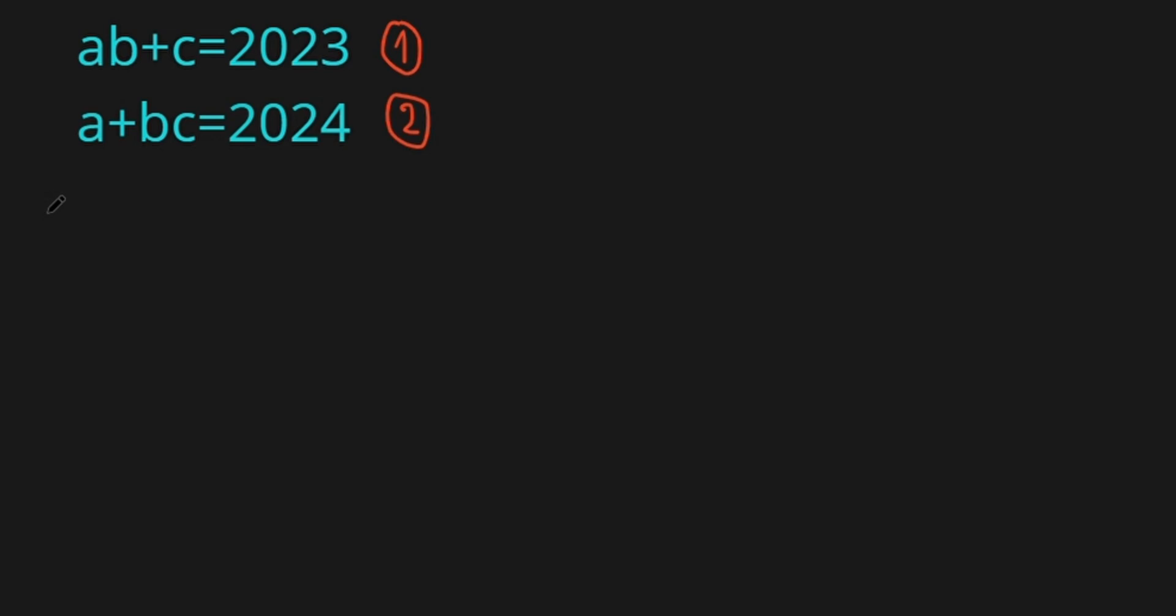Now let's subtract the first equation from the second one. So we have A plus BC, and then minus AB plus C in brackets. All this equals 2024 minus 2023. A plus BC minus AB and then minus C. All this equals 1.